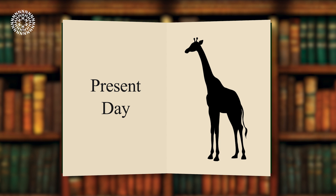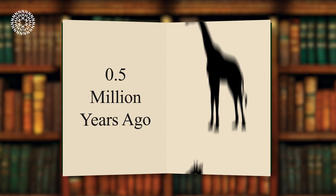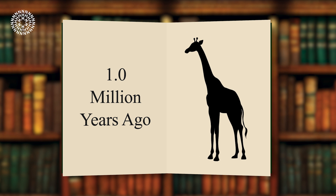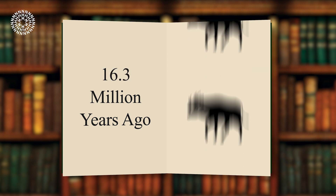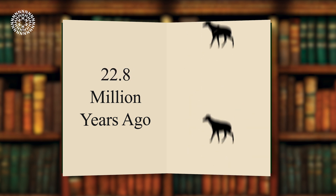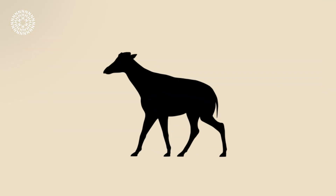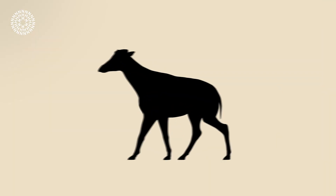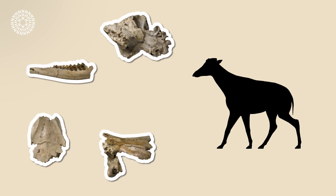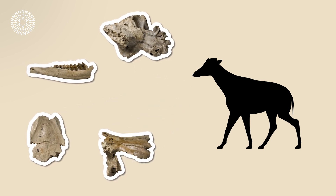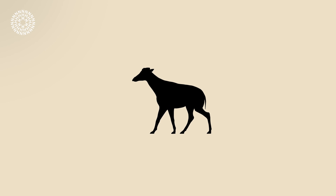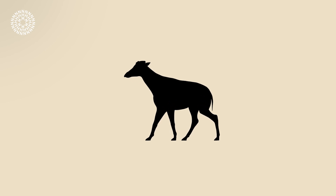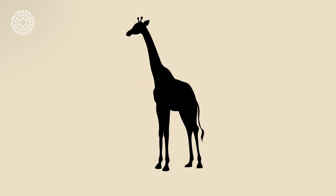Take our giraffe. If we go back generations — one million years ago, lots and lots of generations — you'll eventually get to an animal that looks quite different. Twenty-three million years ago, it doesn't look much like a giraffe at all. Fossils show us that millions of years ago, the ancestors of giraffes had much shorter necks. Over time they got longer and longer, very slowly evolving into modern-day giraffes adapted to life on the savannah.